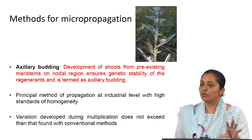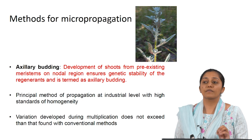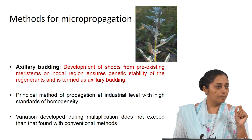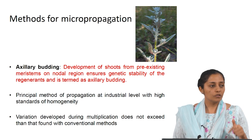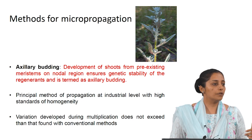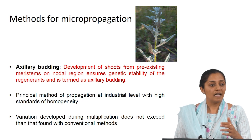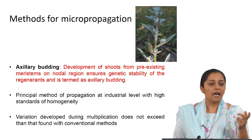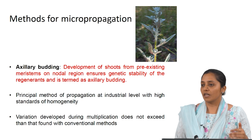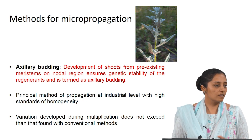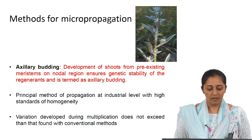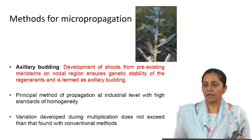Axillary budding is also a method to develop virus-free plants, as discussed in the last class, because these are meristem regions that are rapidly dividing. There is less chance that the virus can propagate from infected areas of the plant to these regions at the same rate as the cells are dividing — and moreover, the vascular bundle is still not formed. So the chances that the virus can propagate to these regions are lower. The principal method for propagation in industry is axillary budding.